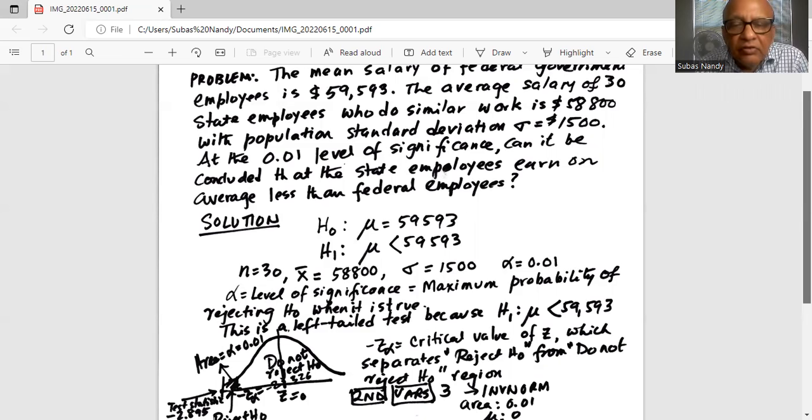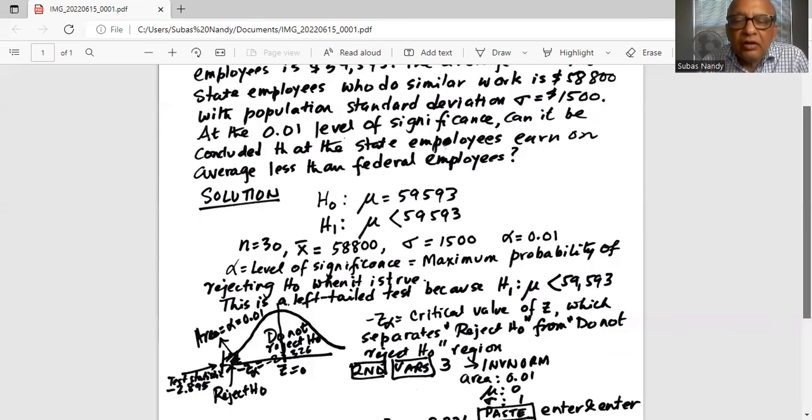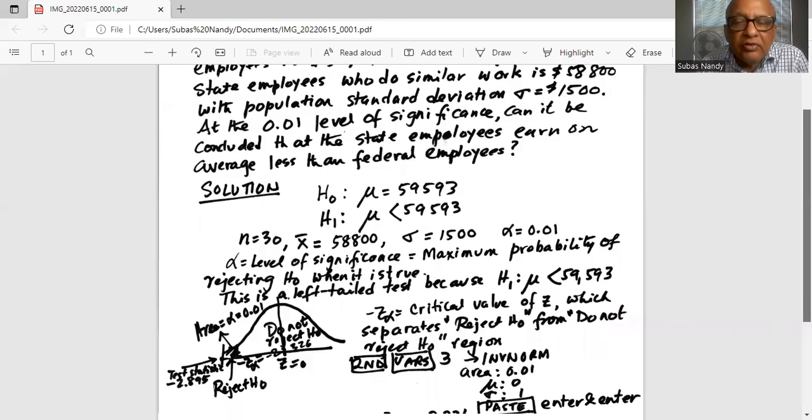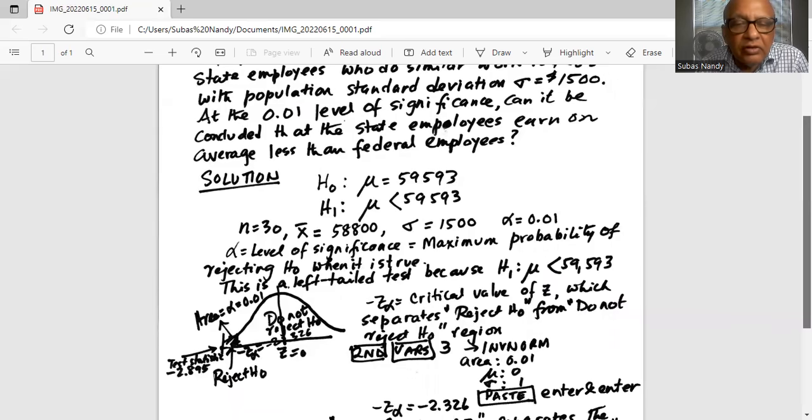What is alpha? Level of significance, which is the maximum probability of rejecting H0 when it is true. This is a left-tail test because mu less than, alternate hypothesis, mu less than $59,593.